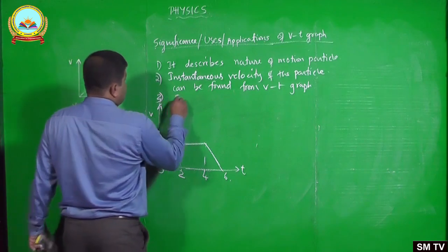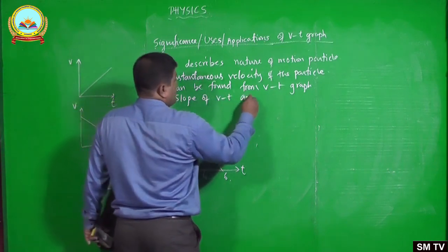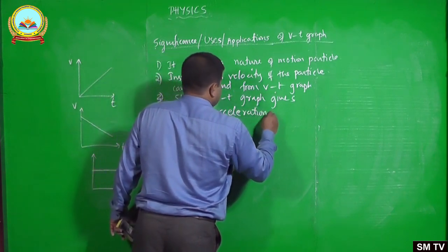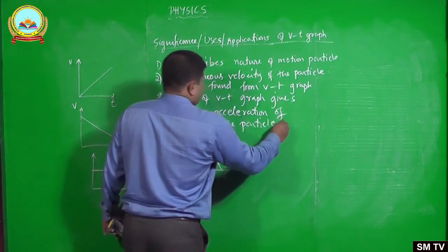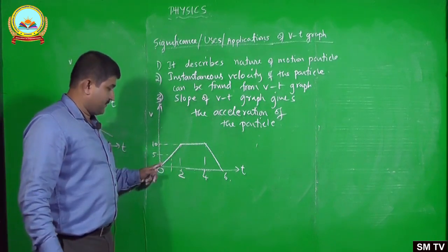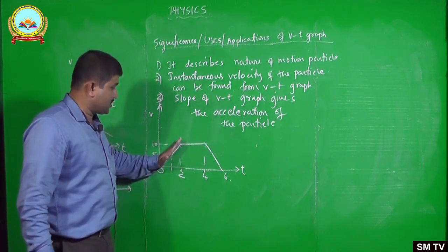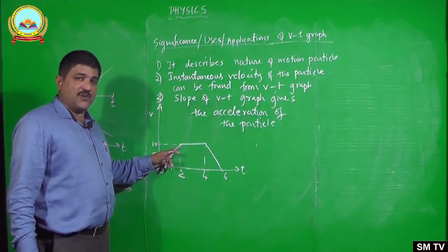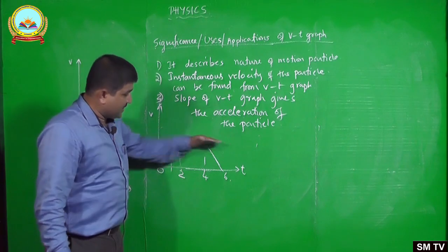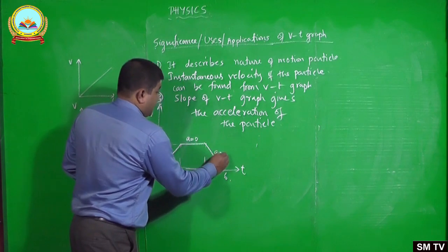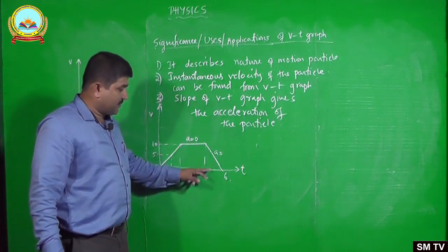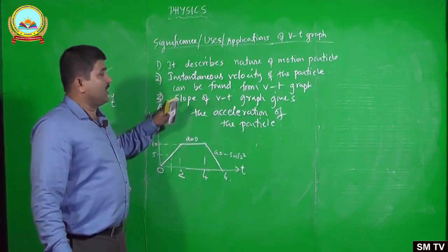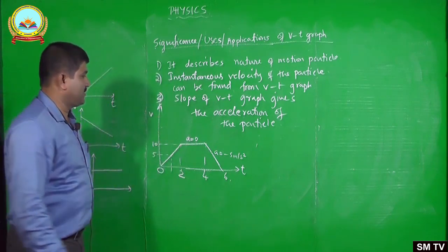Another important use is that the slope of the VT graph gives the acceleration of the particle. For the portion 0 to 2 seconds, slope is positive and constant. For 2 to 4 seconds, slope is zero — meaning acceleration is zero. From the graph, opposite side is 10 and base is 2, so 10 divided by 2 equals 5 — acceleration is plus 5 m/s². From 4 to 6 seconds, velocity decreases from 10 to 0, giving minus 10 divided by 2 equals minus 5 m/s².